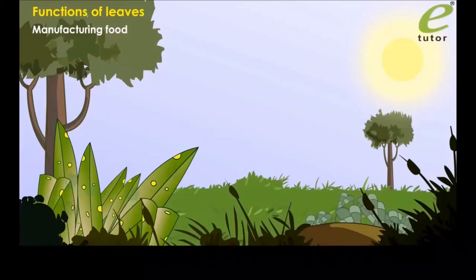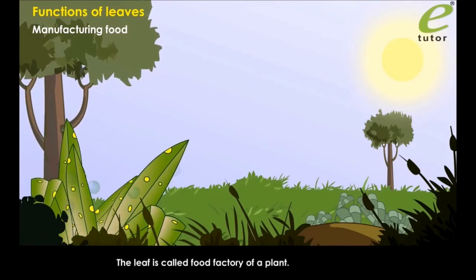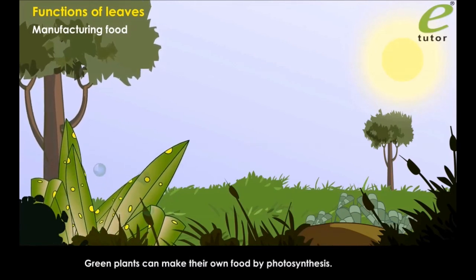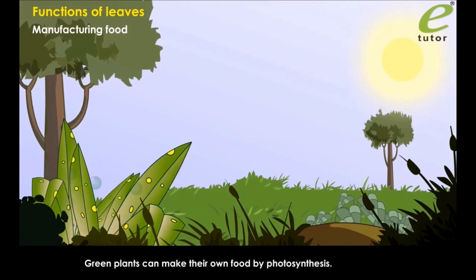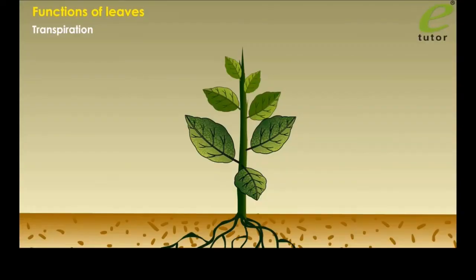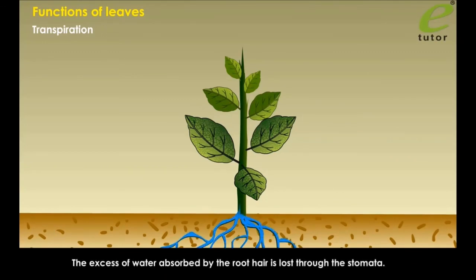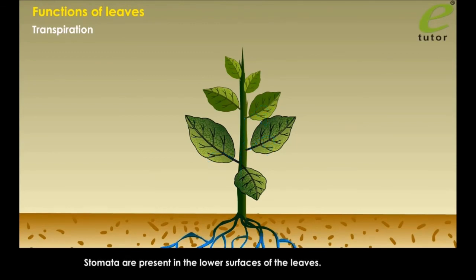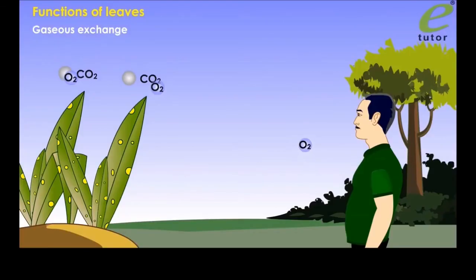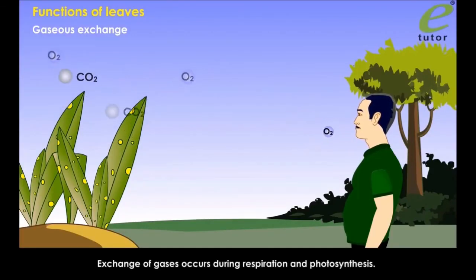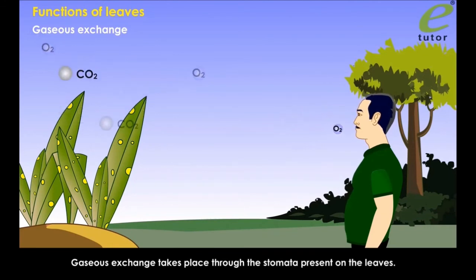The leaf is called the food factory of a plant. Green plants make their own food by photosynthesis. The excess water absorbed by the root hairs is lost through the stomata — this is transpiration. Stomata are present on the lower surfaces of the leaves. Exchange of gases occurs during respiration and photosynthesis through the stomata present on the leaves.